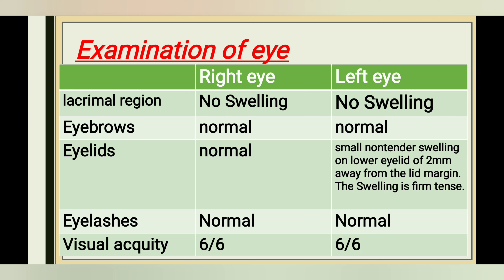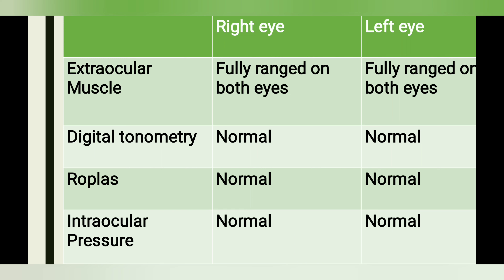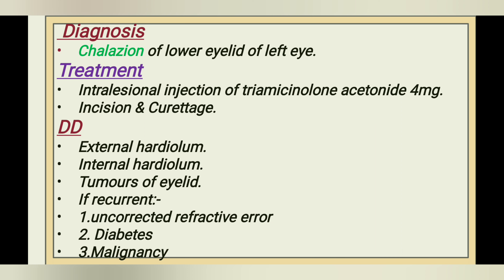Eyelashes are normal on both eyes. Visual acuity is normal — 6/6 on both eyes. Conjunctiva — right eye is normal; left eye on eversion shows a circular area of redness at the palpebral conjunctiva corresponding to the lower lid. Cornea is normal on both eyes with normal corneal reflexes. Anterior chamber is normal in depth; iris shows normal color and pattern on both eyes. Extraocular muscles are fully ranged on both eyes. Digital tonometry normal on both eyes. Intraocular pressure normal on both eyes. The diagnosis is chalazion of the lower eyelid of the left eye.